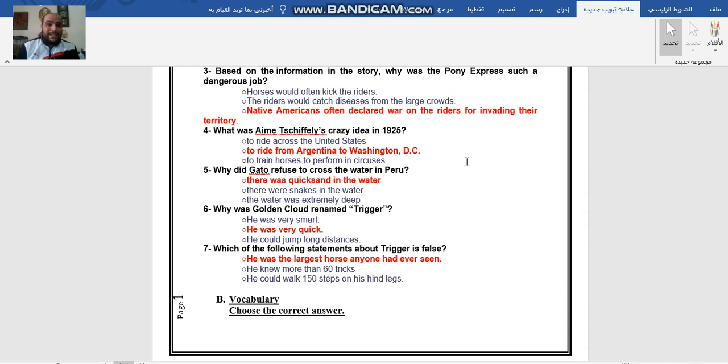Why was Golden Cloud, the horse that was in Hollywood, the most famous horse in Hollywood, renamed Trigger? He was renamed - you know the trigger of the gun? The bullet, when it comes out of the gun, is it so fast or slow? It's so fast. That's why he was so fast. Just like the bullet when it comes out after squeezing the trigger of the gun. He was very quick, he was so fast.